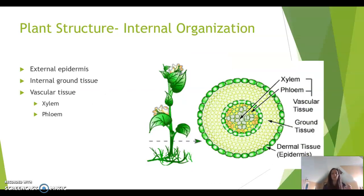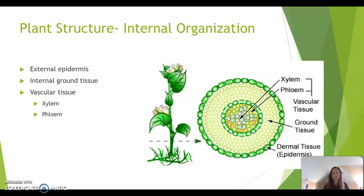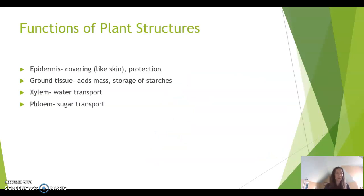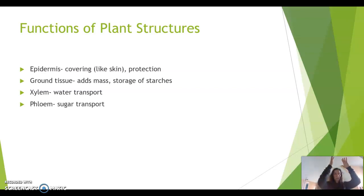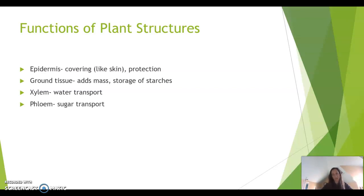We're going to look at the internal organization of our plants. Inside the plant, we have a lot of ground tissue, which makes up the bulk of the plant — seen in the stem, roots, leaves, and even flower buds. We also have vascular tissue in the middle, which transports water and sugars. The epidermis covers the plant for protection. The xylem transports water, pulling it up from the roots through xylem tubes. The phloem transports sugar from the leaves to the buds, and extra sugar gets transported down to the roots.